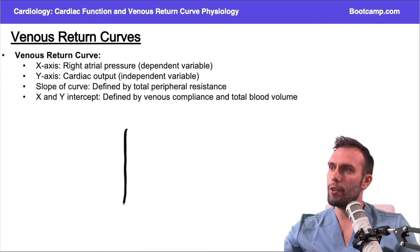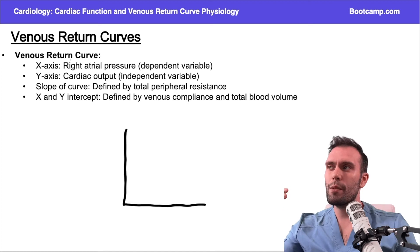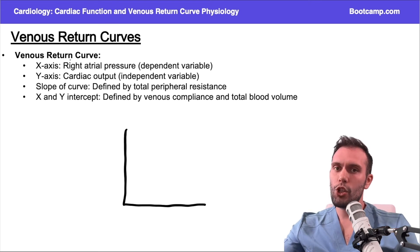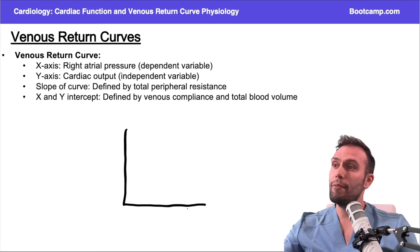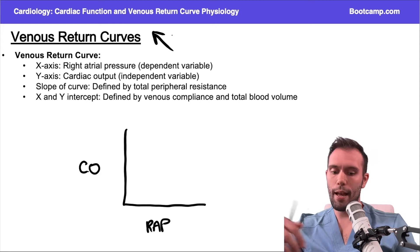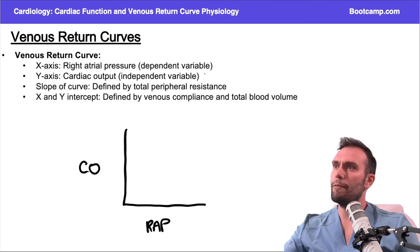We just talked about the cardiac function curve — now let's talk about the venous return curve. Here we're focusing more on the blood coming back to the heart as opposed to the cardiac output. We want to change the cardiac output to see what happens to the right atrial pressure. I'll keep the same axes — x-axis is right atrial pressure, y-axis is cardiac output — but in this curve I'm measuring venous return, so I've flipped the independent and dependent variables.